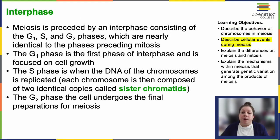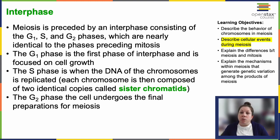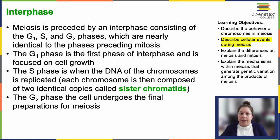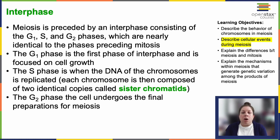Meiosis begins with an interphase comprising G1, S, and G2 phases, just like mitosis. G1 is primarily focused on cell growth. S entails DNA replication, resulting in pairs of identical copies of sister chromatids held together at their centromeres until meiosis II. G2 involves final preparations for meiosis. During DNA duplication in the S phase, each chromosome forms two identical sister chromatids joined at the centromere, which will later be separated in meiosis II. In animal cells, centrosomes organizing the mitotic spindle — the microtubules — also replicate, setting the stage for the initial meiotic phase.